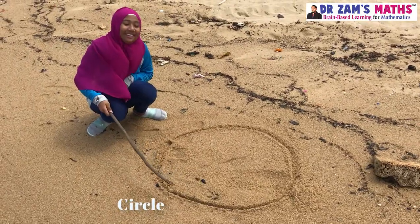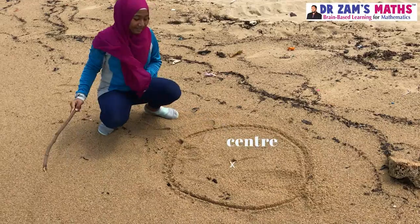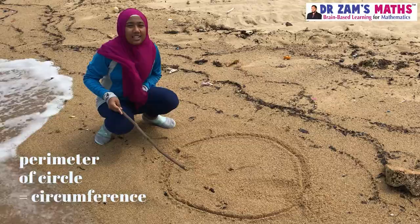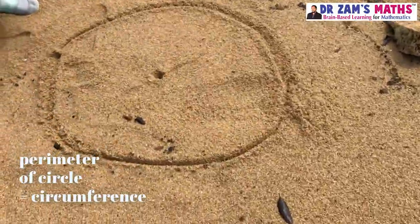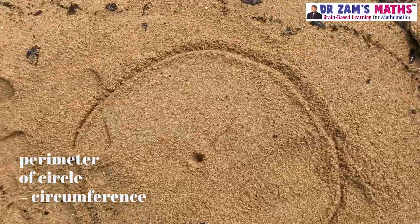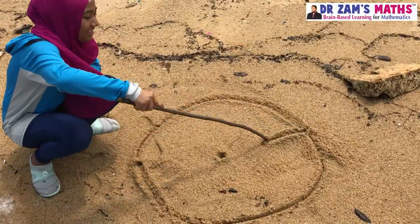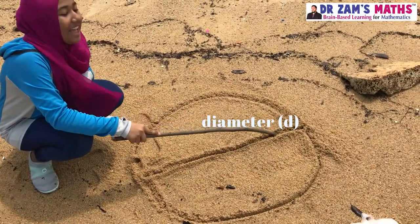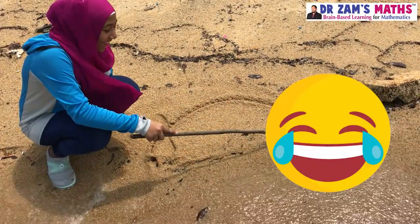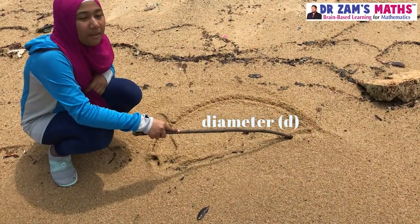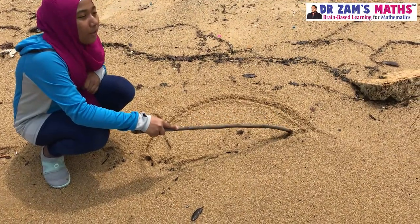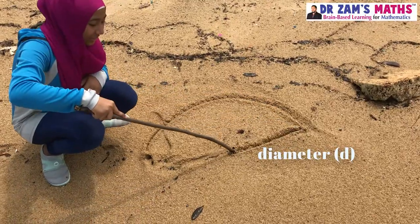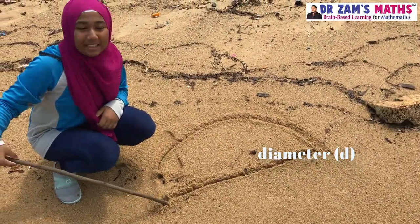This is a circle and this is the center. The outside or the perimeter of the circle is called the circumference. This is a diameter — this line is a diameter. The diameter goes from one end of the circumference, through the center of the circle, to the other end of the circle. This is the diameter of the circle.